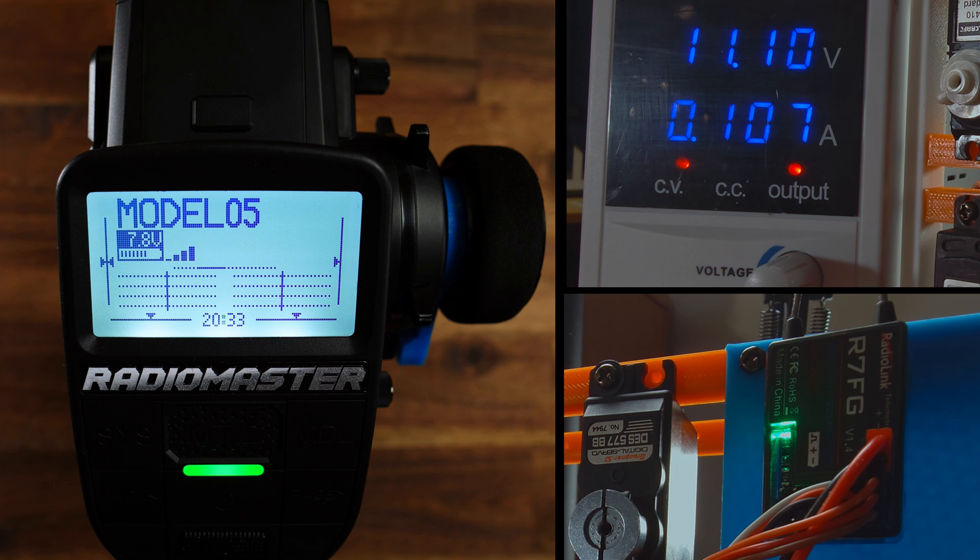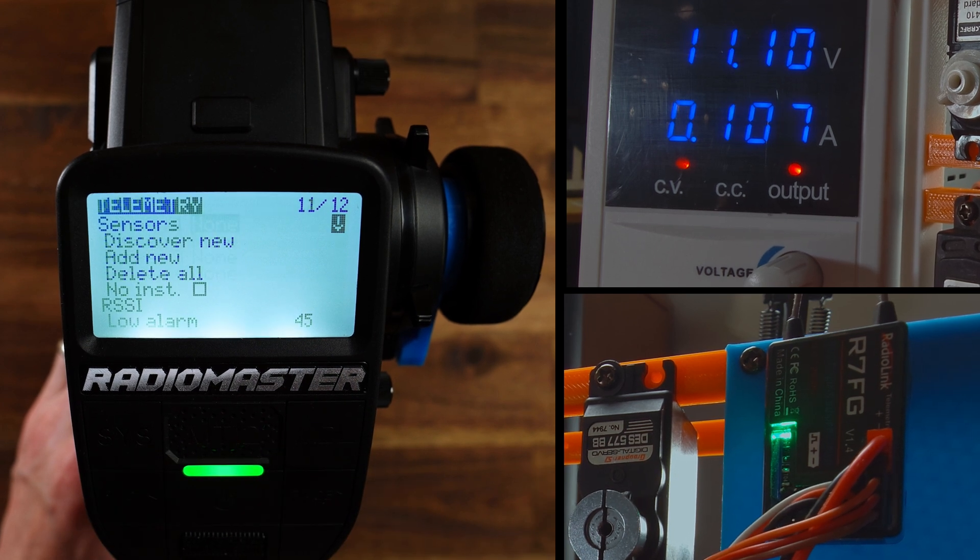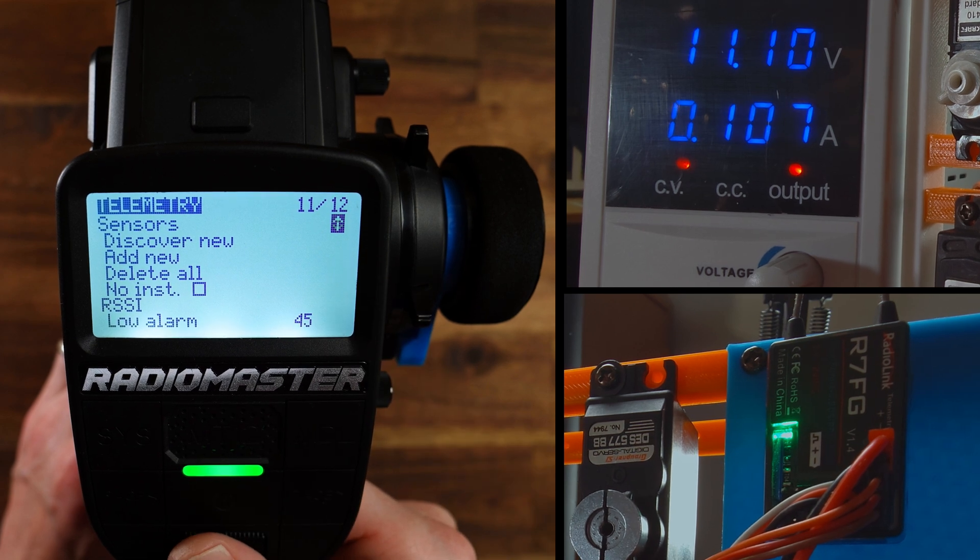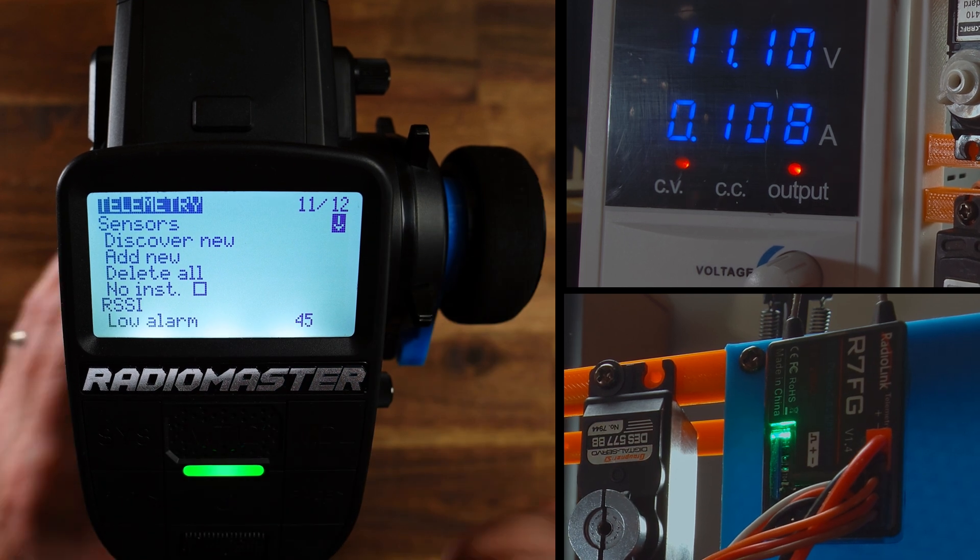And now let's check how we can display these two voltage values here on the Radiomaster MT12. For that go to the model menu, to the left and here telemetry. Here you see this little arrow. With this you can expand the sensor list. But for now there are no sensors.